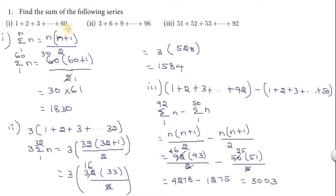First sum: 1 plus 2 plus 3 plus up to 60. This is the natural number series. Summation 1 to n, where n equals 60. Substitute 60: 60 into 60 plus 1 divided by 2. Cancel 2 and 60, giving 30. So 30 into 61 equals 1830. The answer is 1830.